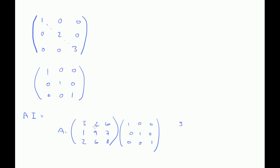This row by this column now. One times zero is zero, nine times one is nine, seven times zero is zero.